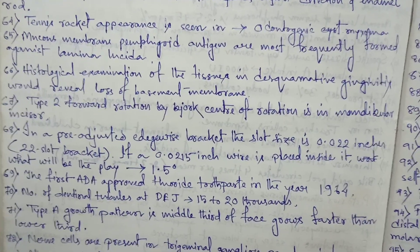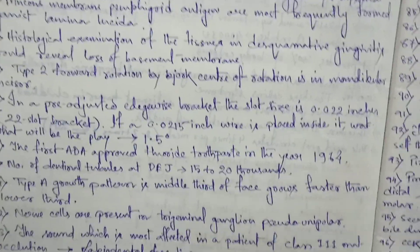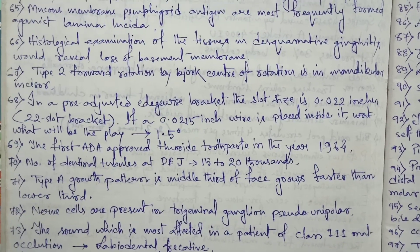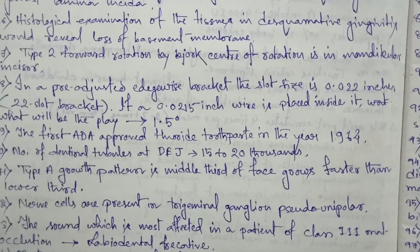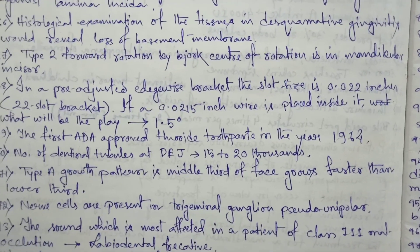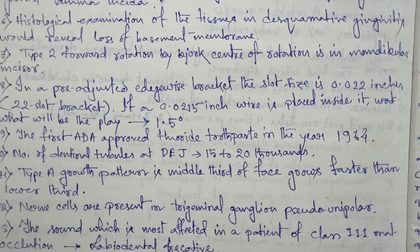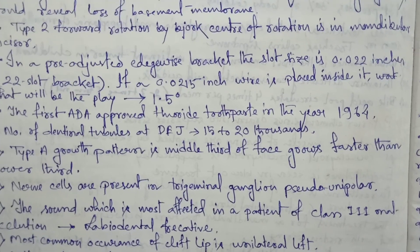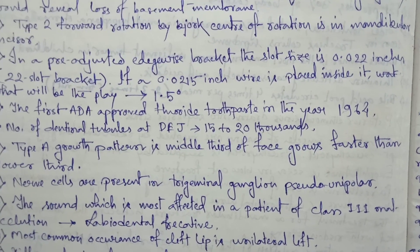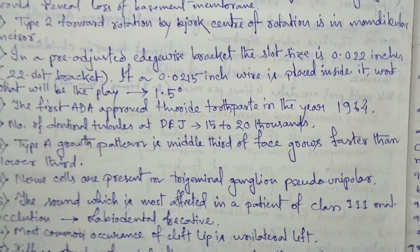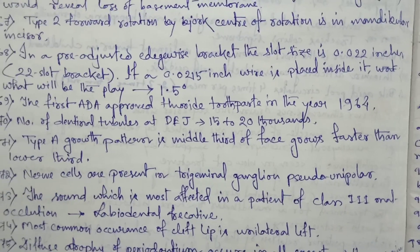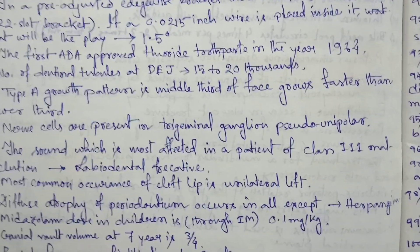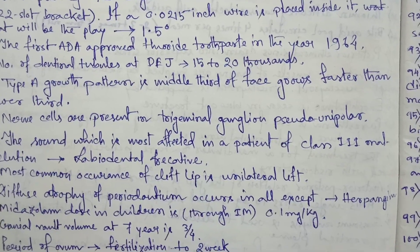The first ADA approved fluoride toothpaste was in the year 1964. Number of dentinal tubules at the DEJ is 15,000 to 20,000. Type A growth pattern: the middle third of the face grows faster than the lower third. Narb cells are present in trigeminal ganglia and are pseudo-unipolar.